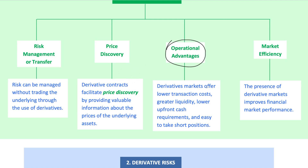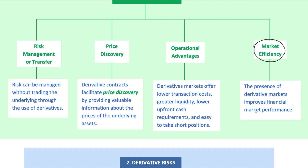Then we have operational advantages. Derivatives come with lower transaction costs compared to cash markets, making them attractive for active traders. Plus, you don't need a massive capital outlay to get started, as margin requirements are generally lower than what you'd need in the spot market. Going short in derivatives is often easier than in traditional markets. Thanks to these benefits, derivatives add to market efficiency by making it easier and cheaper to trade assets, which ultimately helps financial markets run smoother.